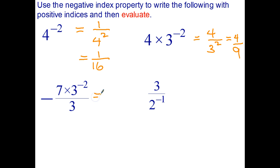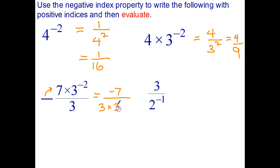Third question: the negative sign can be brought up to the numerator, giving us negative 7 on top. The 3 stays in the denominator. The 3 to the negative 2 goes to the denominator and becomes 3 to the positive 2. And 3 squared is 9, times 3 is 27.